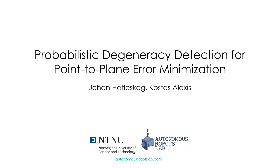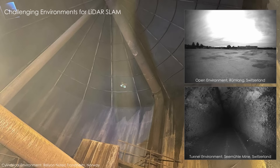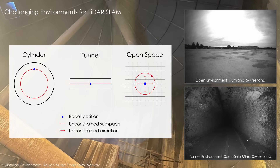This video presents Fabulous Degeneracy Detection for Point-to-Plane Error Minimization. LiDAR SLAM is widely used for robust localization and mapping in challenging environments. However, LiDAR SLAM is susceptible to failure in geometrically uninformative environments such as cylindrical tanks, tunnels, and open spaces. The lack of information renders the underlying geometric optimization degenerate.